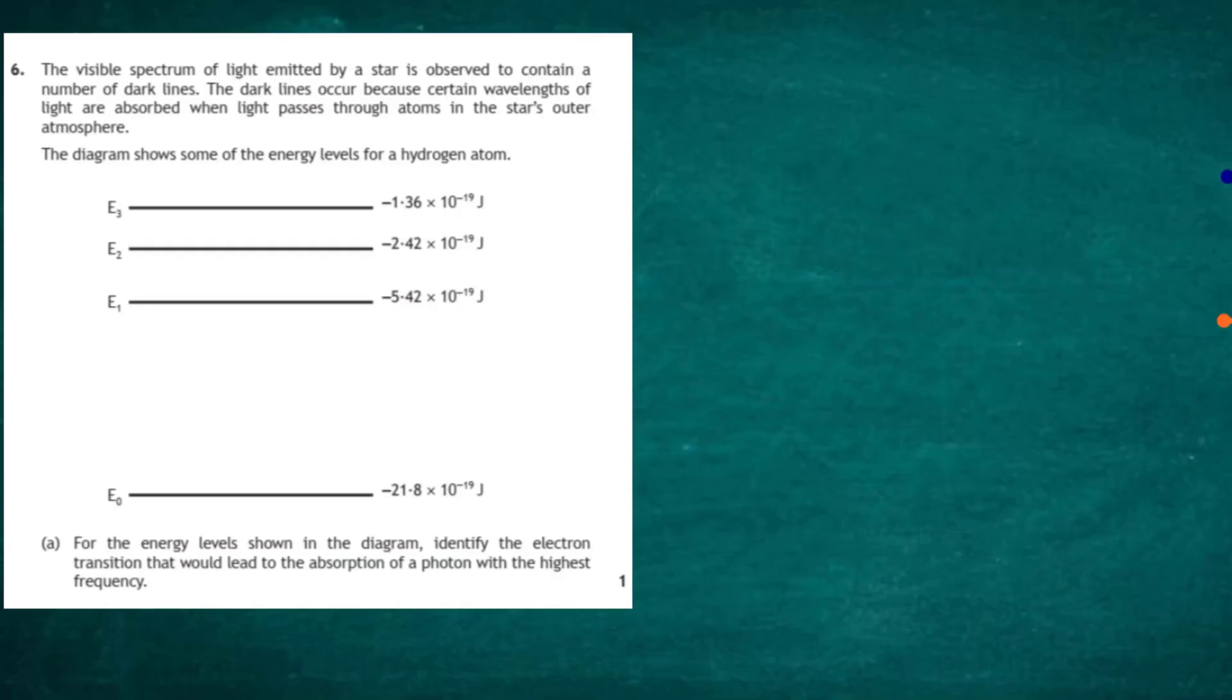Question 6 from the 2017 Higher Physics Examination from the SQA, taken from section 2. The visible spectrum of light emitted by a star is observed to contain a number of dark lines. The dark lines occur because certain wavelengths of light are absorbed when light passes through atoms in the star's outer atmosphere.